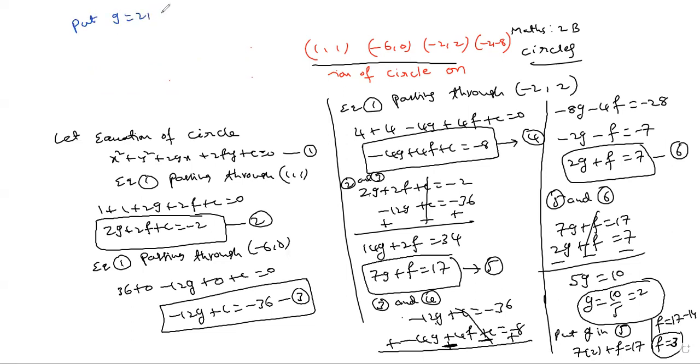Substituting g = 2 and f = 3 into equation 2: 2(2) + 2(3) + c = -2. This gives 4 + 6 + c = -2, so 10 + c = -2, which means c = -12.